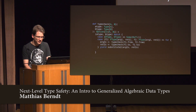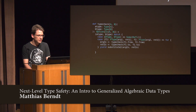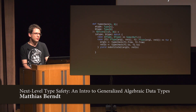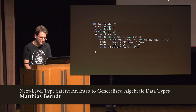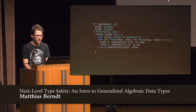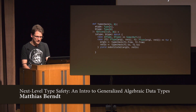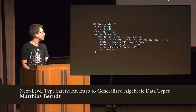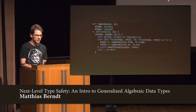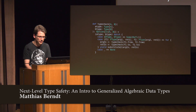This code is basically impossible to get wrong — short of always returning None. If you give it an honest attempt, you'll end up with this implementation. Of course, if one type is Double and the other is a function type, they are not the same.